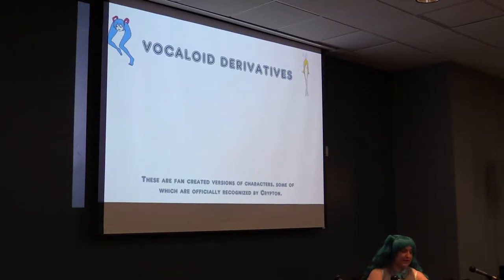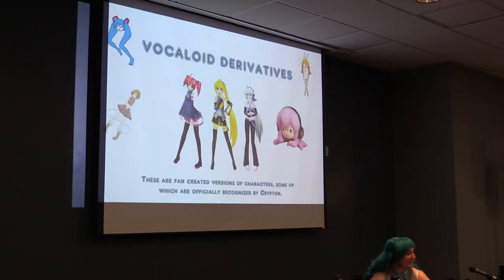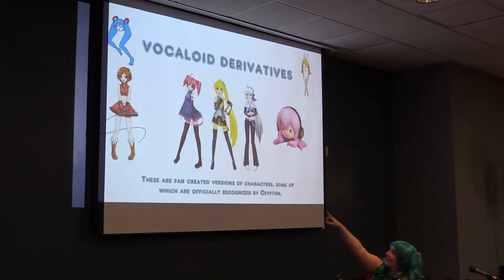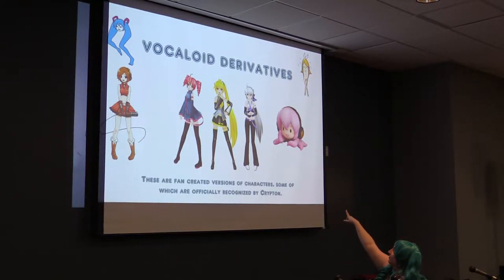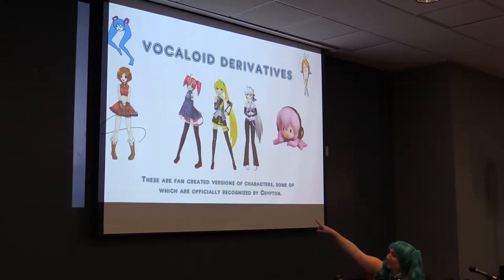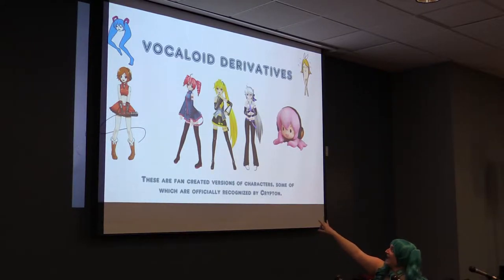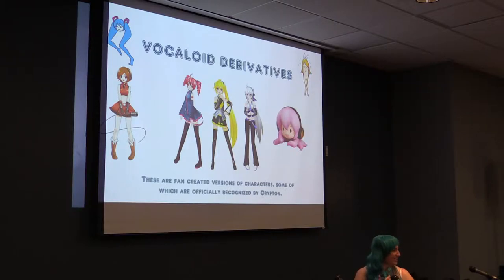Vocaloid Derivatives — you'll see these a lot in the games or in fan art. These are fan-created versions of characters. The ones shown here are officially recognized by Krypton. One is Miku with weird legs. There's also Larval Rin and Taco Luca. The character with the red pigtails is Kasane Teto. She started as a derivative when people would pitch the voices way up or way down, distorting the software so much it didn't sound like the original character — and fans made characters for those sounds.